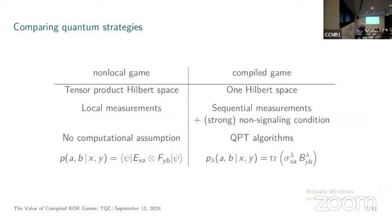What are the differences between quantum strategies for non-local games and compiled games? For non-local games, we have a tensor product Hilbert space and can do local measurements. For compiled games, we just have one Hilbert space and one player, but we can do sequential measurements, and we have this very strong non-signaling condition based on the QHE assumptions. Non-local games are purely information-theoretic with no computational assumption, while strategies for compiled games should be QPT algorithms. For the probability distributions, one comes from a tensor product state, while the other comes from the trace of a sequential measurement.